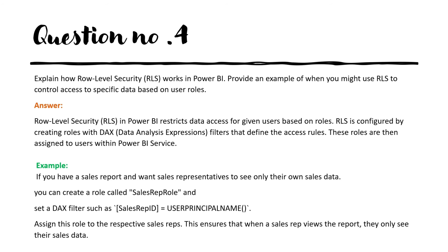The fourth scenario-based question is on Row-Level Security. Explain how Row-Level Security works in Power BI and provide an example of when you might use RLS to control access to specific data based on user roles. Row-Level Security in Power BI restricts data access for a given user based on roles. RLS is configured by creating roles with DAX — Data Analysis Expressions — which filters data and defines access rules. These rules are then assigned to users within the Power BI service.